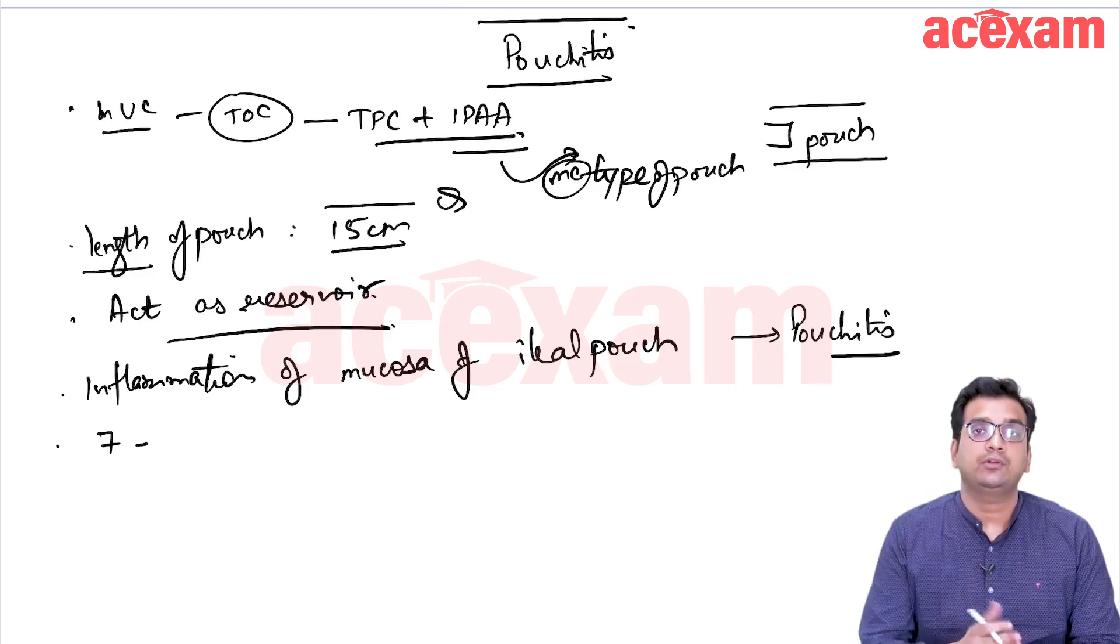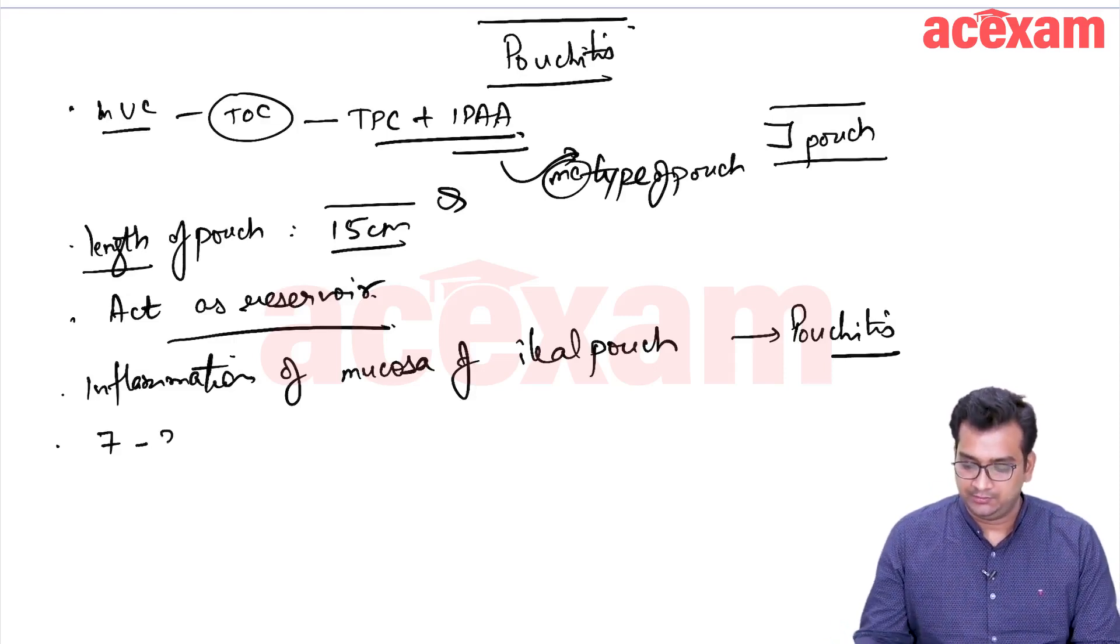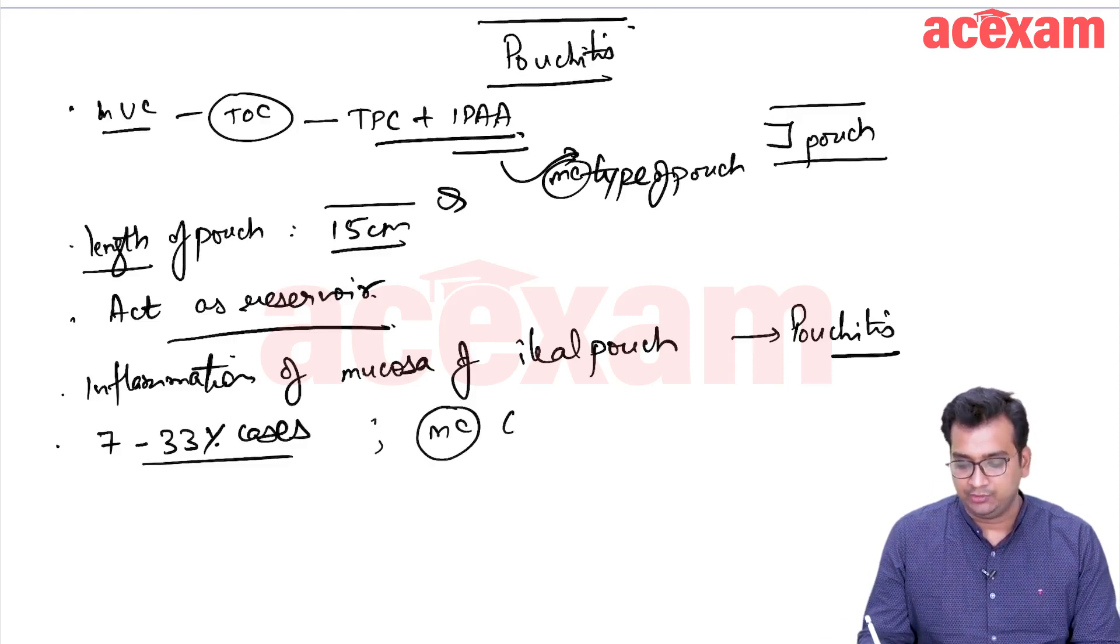Now, it is the most common complication of total proctocolectomy with ileal pouch anal anastomosis, seen in 7 to 33% of cases, and it's the most common complication.